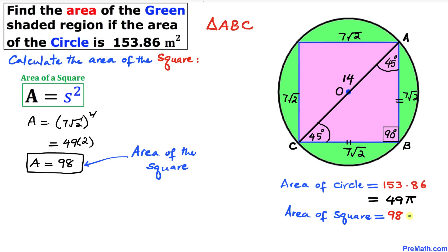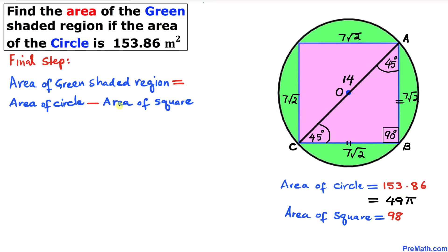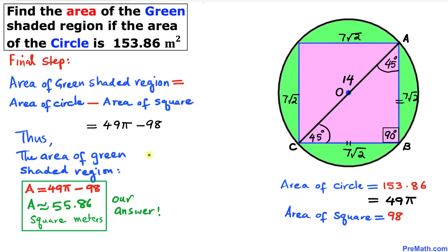The area of the square is 98 square meters. For the final step, the area of the green shaded region equals the area of the circle minus the area of the square, which is 49 pi minus 98, approximately equal to 55.86 square meters. That's our final answer.